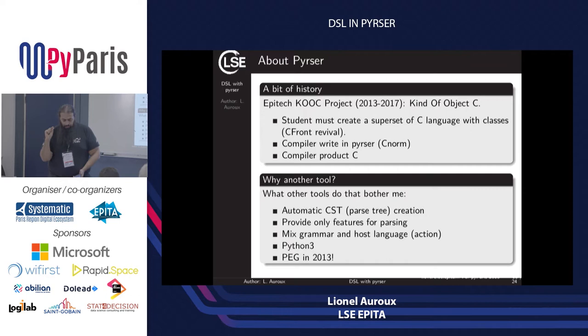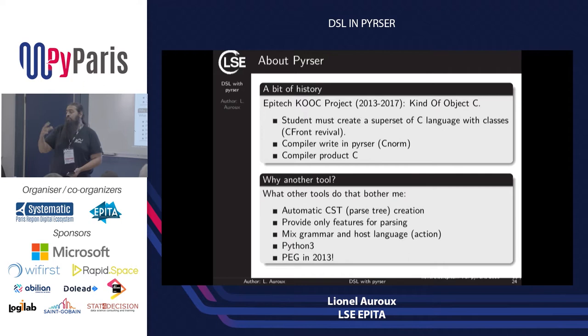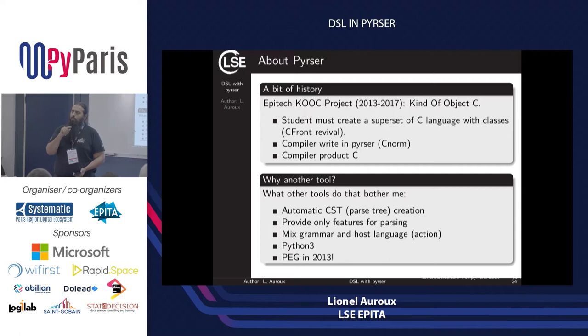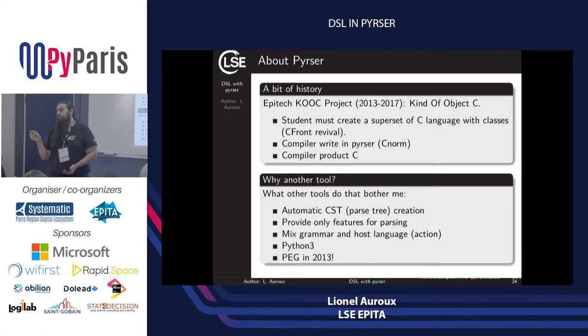A little context for why I created Pyrser: I needed, with my students, to create a superset of C to include classes. I wanted to provide a base C front-end to my students, and they just needed to inherit from this grammar and slightly modify it. For me, it's better to map a grammar onto classes and map rules onto methods, because it's very easy — if you need to re-implement a rule, you just use inheritance to implement a method.